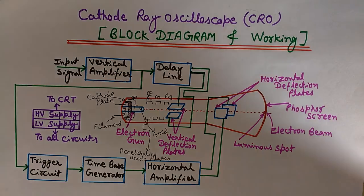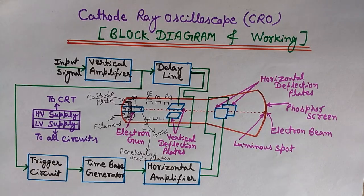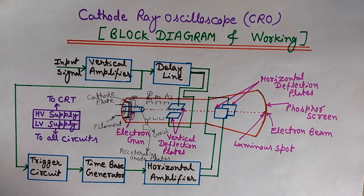Now, what is the job of the time base generator? On the screen we get a graph or waveform between the signal and time. The time on the x-axis is produced by the time base generator. In CRO, the time base generator develops the horizontal sweep voltage that deflects the beam from left to right, which represents the time axis.